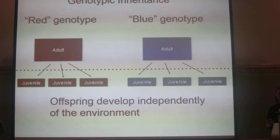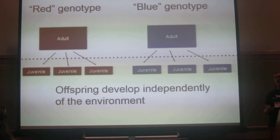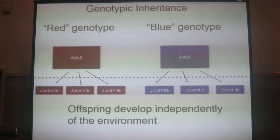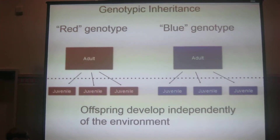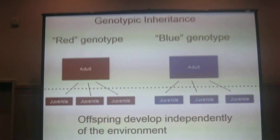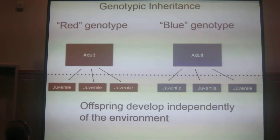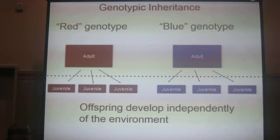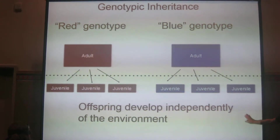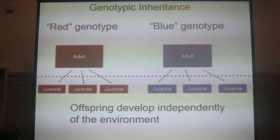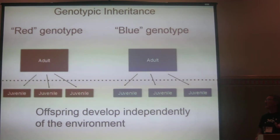I'm going to start by talking about some things that you're pretty familiar with — just some ideas about how inheritance can work in terms of having transgenerational effects. I'm starting with the normal setup where inheritance is just genotypic. There are two genotypes on the slide: a red genotype, which always produces red offspring, and a blue genotype that always produces blue offspring. Importantly, offspring develop independently of both the environment and the maternal phenotype, depending only on their genotype.